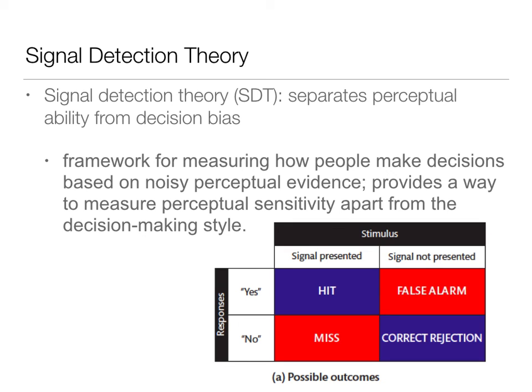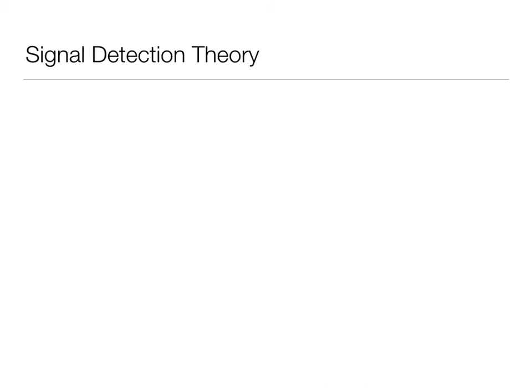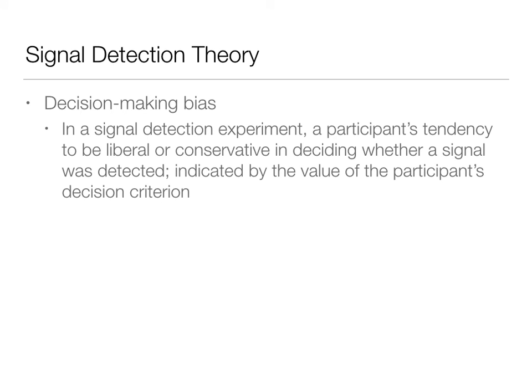What we're really looking for is hits versus correct rejections. If you're doing this perfectly, you will have 50% hits and 50% correct rejections because half the time the stimulus is there and half the time it's not. This decision-making bias in a signal detection experiment is your tendency to either be liberal or conservative in deciding whether it was there or not. 'Maybe I saw it — yes' would be pretty liberal, while 'maybe I saw it but I don't want to say I did' would be conservative. We each have different biases in our perceptions and how we're willing to answer these questions, and signal detection theory will start to show you that on the curve.